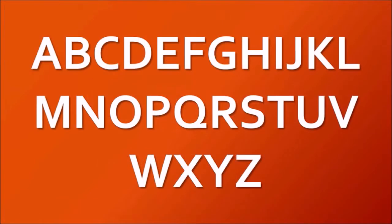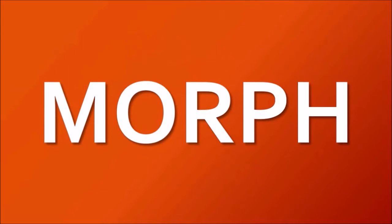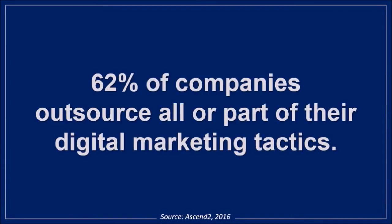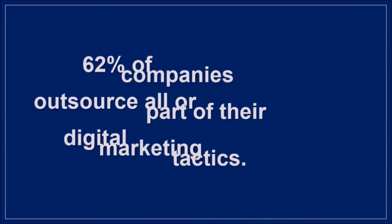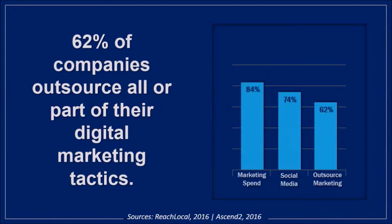In this example, I have a text box with the letters A to Z, which morphs into the word morph, like so. In the second example, I have a bunch of text across the screen, which morphs and creates a cool effect, and it's a great way to keep your audience engaged. So now let me show you how it works.